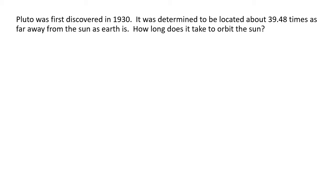First problem: Pluto was discovered in 1930 — how long does it take to orbit the Sun? One way would be to observe and wait for a full orbit, but as you'll see, that's not very practical. We can use Kepler's laws instead. Pluto's average distance from the Sun is about 39.48 AU. We know this because by noting Pluto's position over a short time, seeing a small arc of its elliptical orbit, we can calculate the full orbit and the average distance involved fairly quickly.